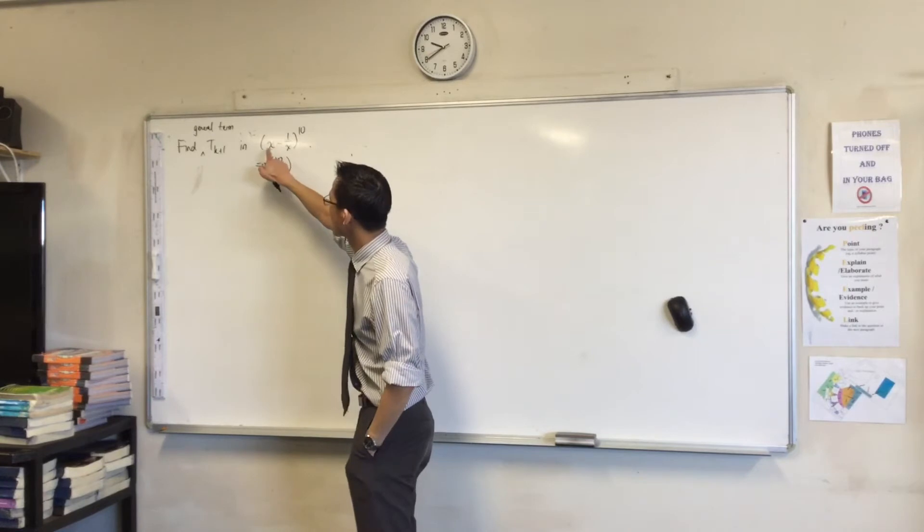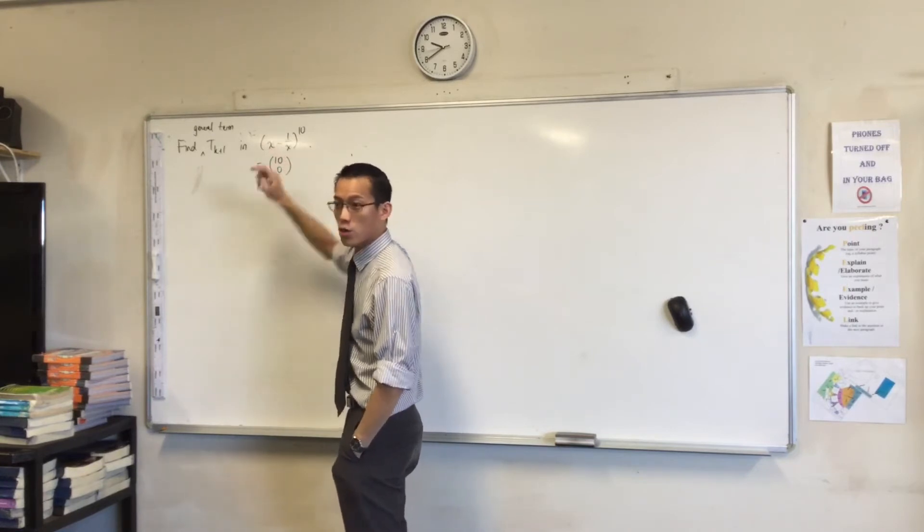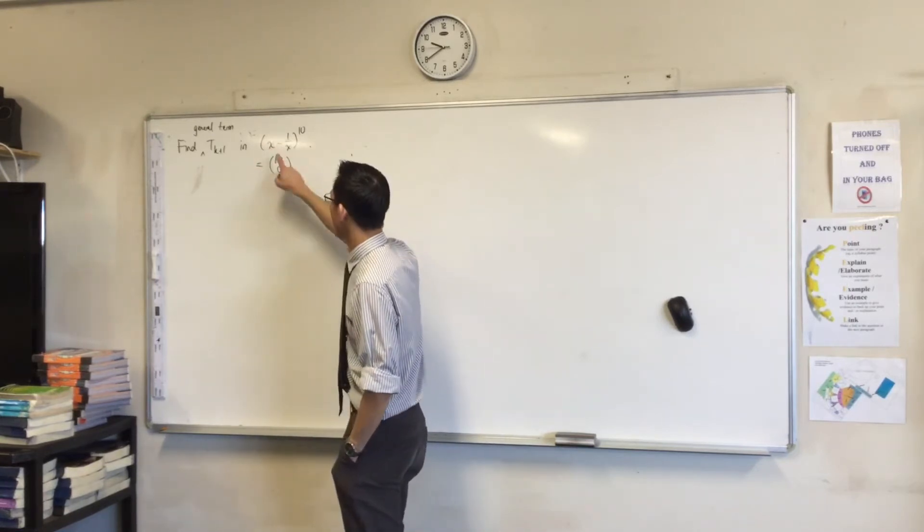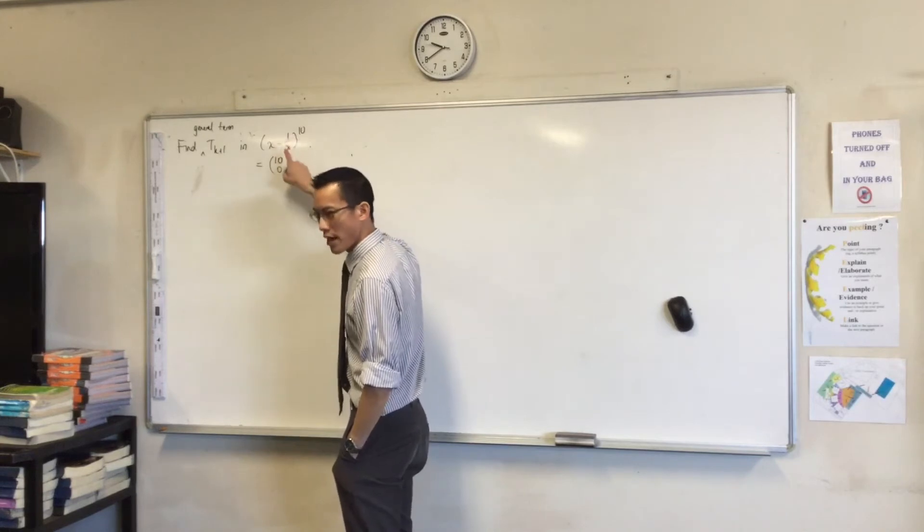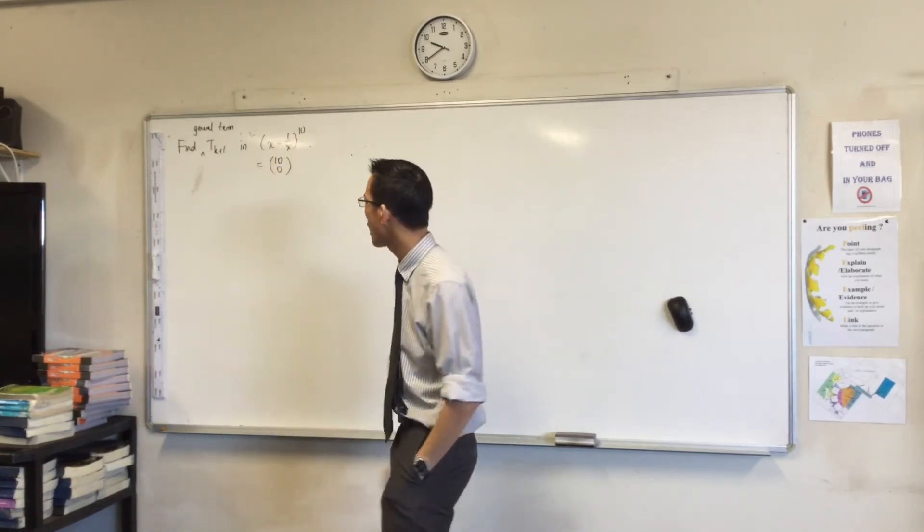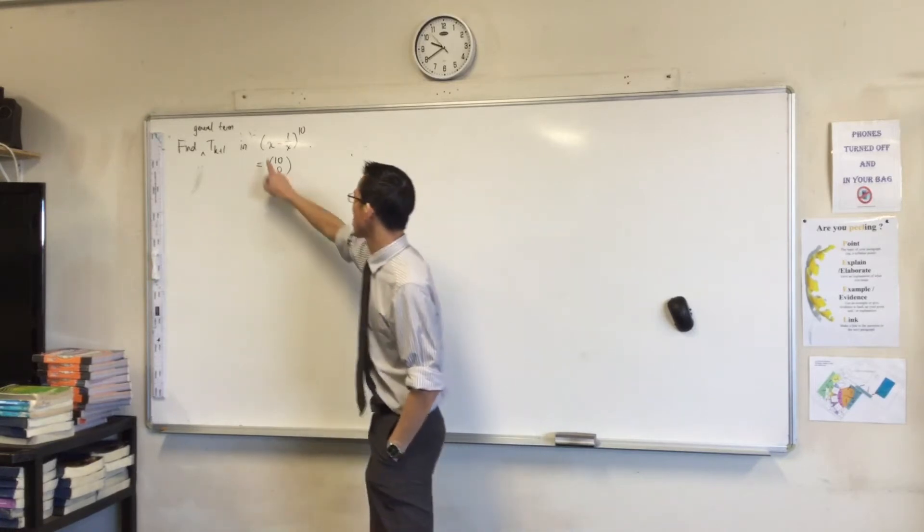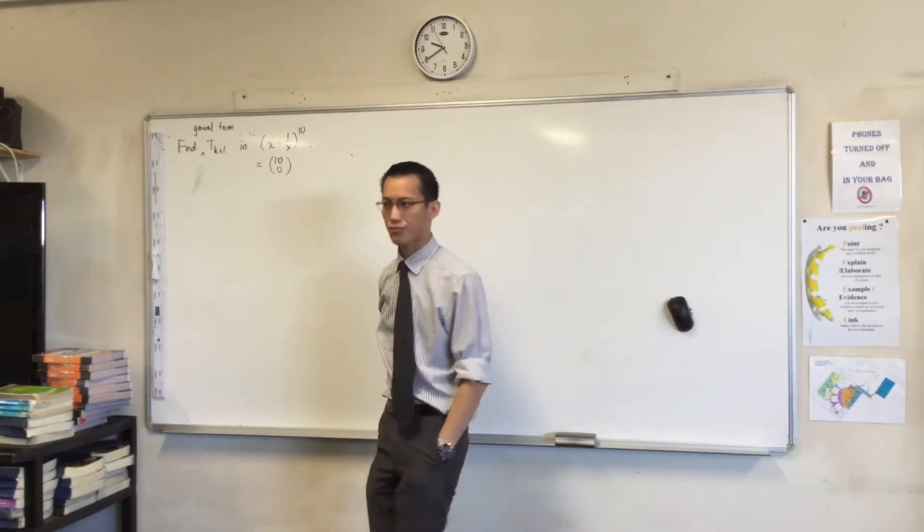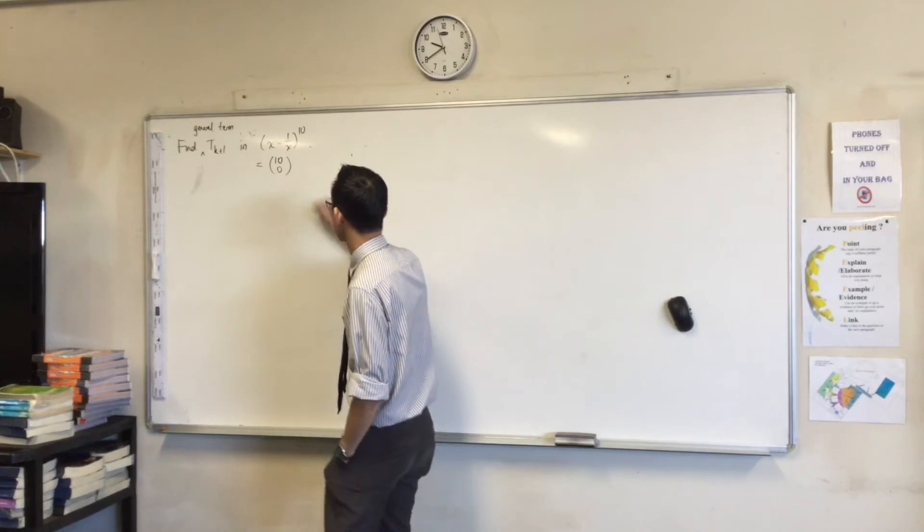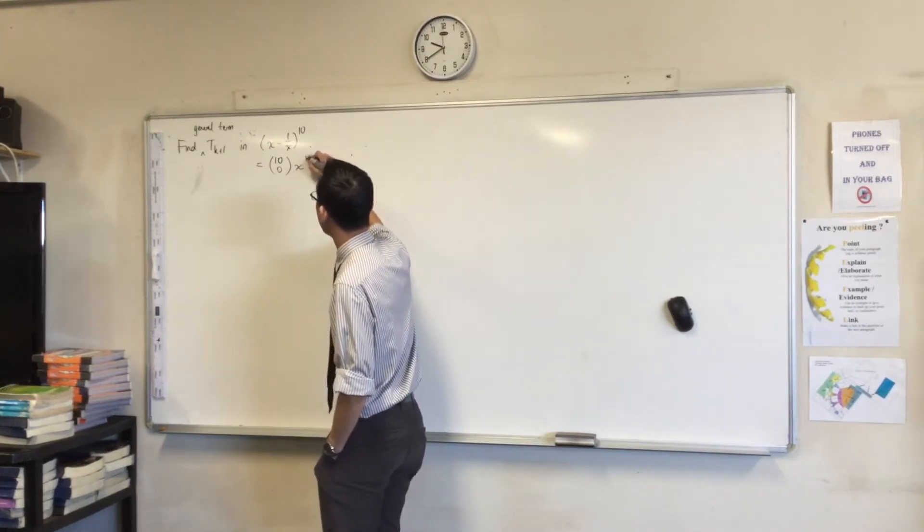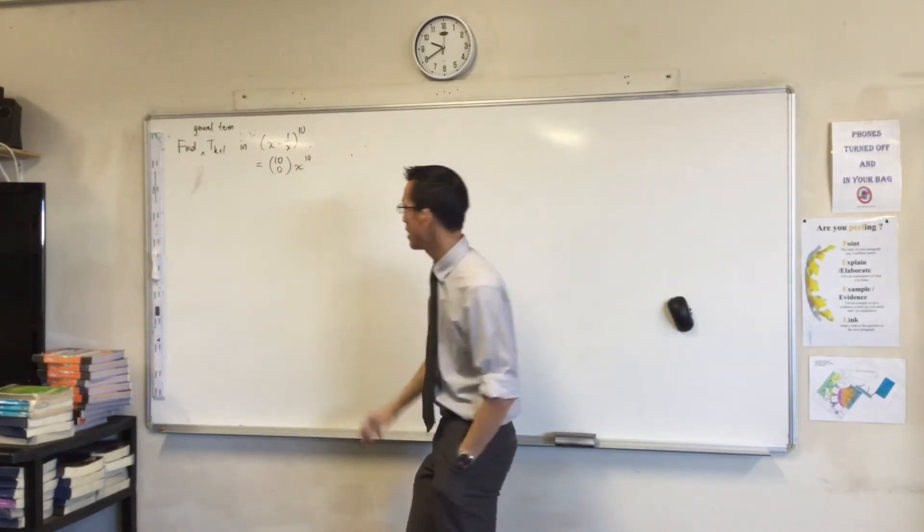Then you're going to have some of these guys and some of these guys. Those are the other two components. Don't forget, this is actually a negative 1 over x, so the minus sign's got to come along for the ride. Which one do you want to start with? Do you want to start with lots of these or with lots of these? Let's just do the x's. I think that's a natural way to go. So we'll say there's going to be 10 of those.